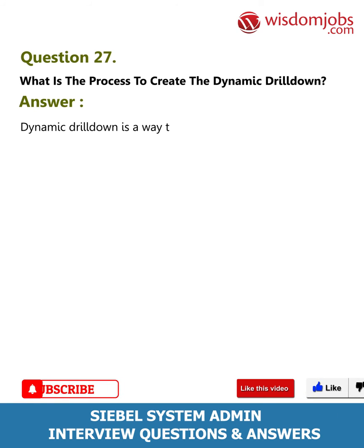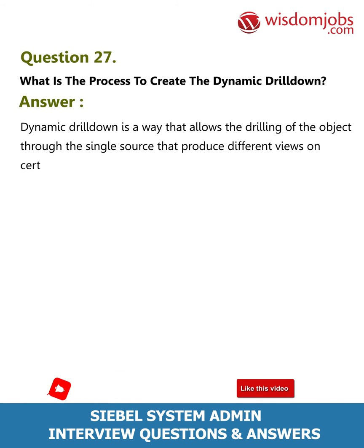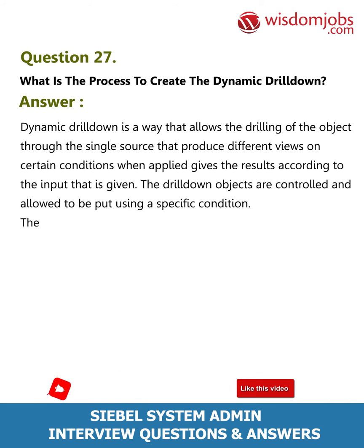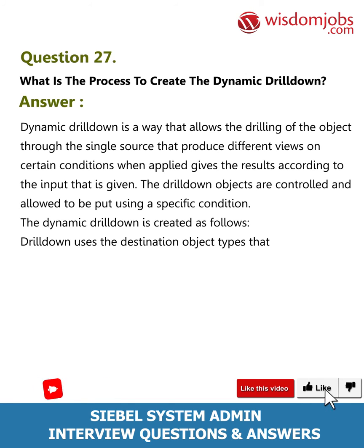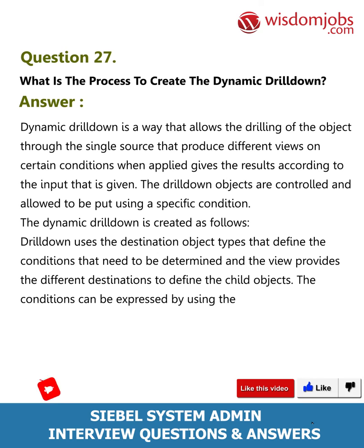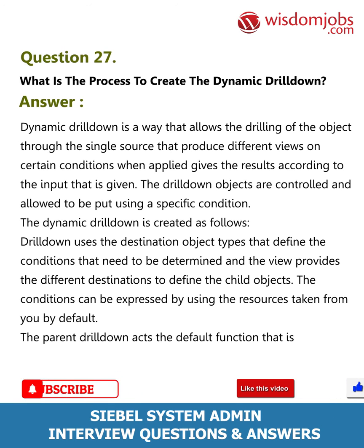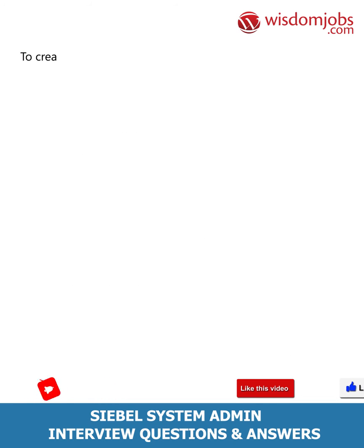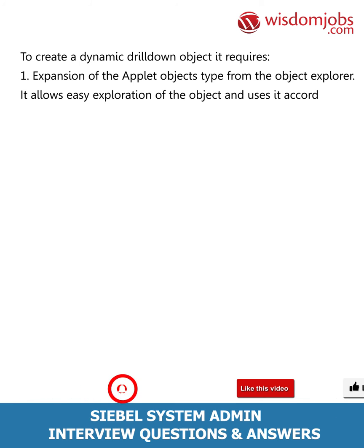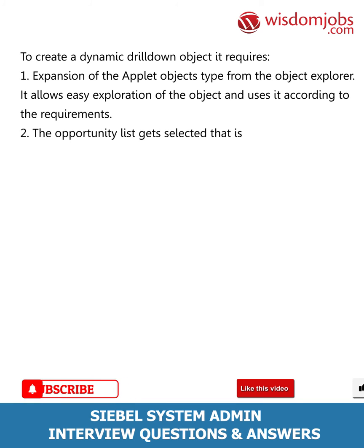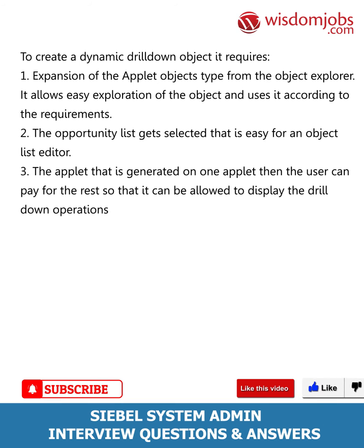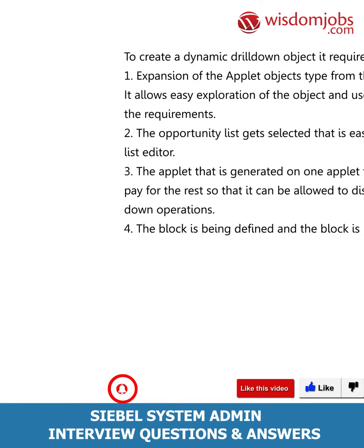Question 27: What is the process to create the dynamic drill down? Answer: Dynamic drill down allows drilling of the object through a single source that produces different views on certain conditions. The drill down objects are controlled using a specific condition. Drill down uses destination object types that define the conditions to be determined, and the view provides different destinations to define child objects. To create a dynamic drill down object: (1) expand the applet objects type from the object explorer, (2) select the opportunity list from the object list editor, and (3) define the applet and the block for drill down operations.